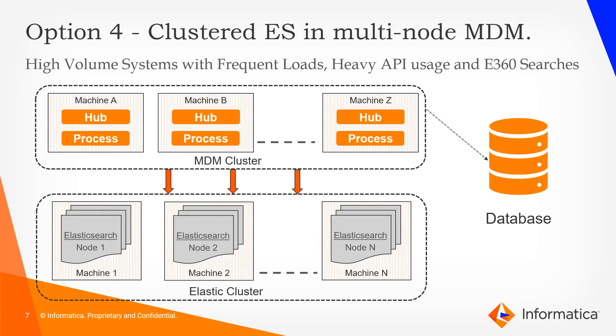The last approach that we have is a dedicated MDM cluster interacting with a dedicated Elasticsearch cluster. Here, as you can see, we have a range of machines from machine A to machine Z, which basically form an MDM cluster, each hosting either the hub server or the processor or different combinations of those. This is then tied down with a dedicated Elasticsearch cluster, which can range from one machine to n number of machines, depending on the requirements and the data volumes. This kind of approach is the most recommended for production environments which see high volume, frequent data loads, heavy API usage, and frequent E360 searches.